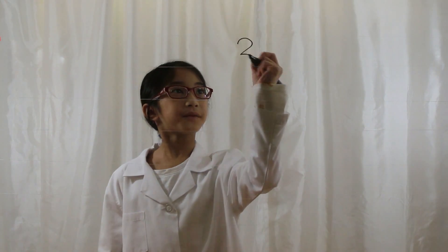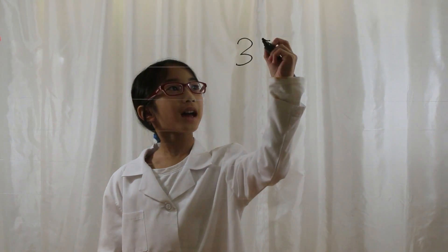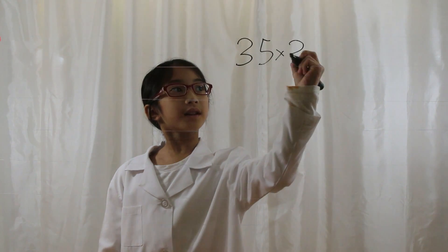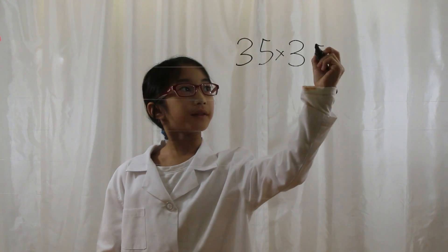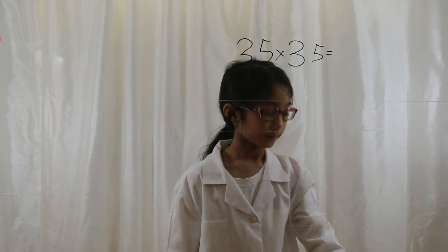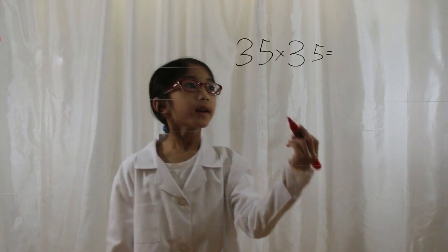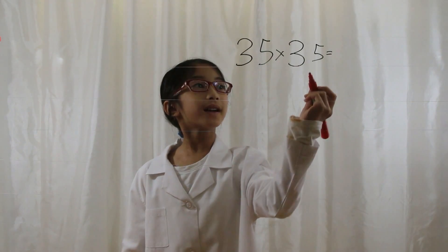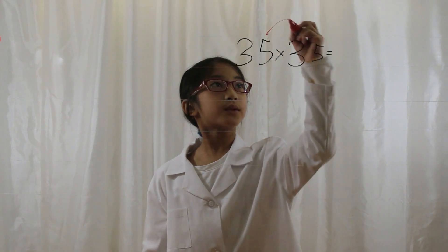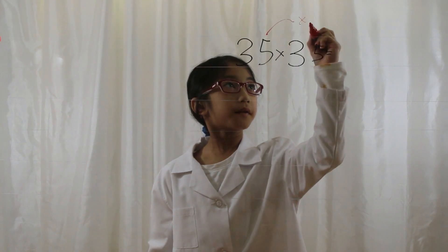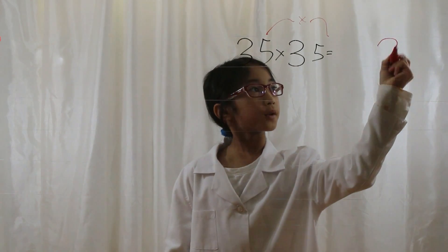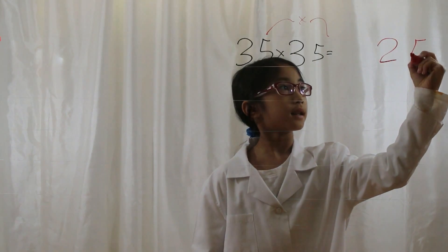Let's say you have 35 times 35. You look at the ones digits and say 5 times 5 is 25. Therefore, you put a 25 at the end.